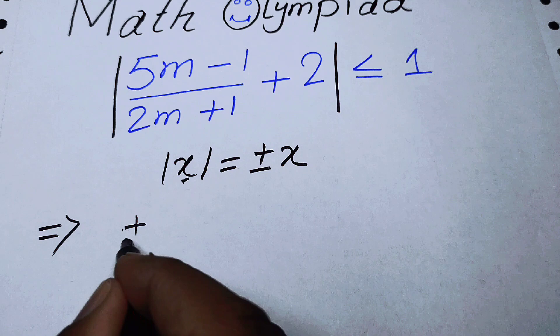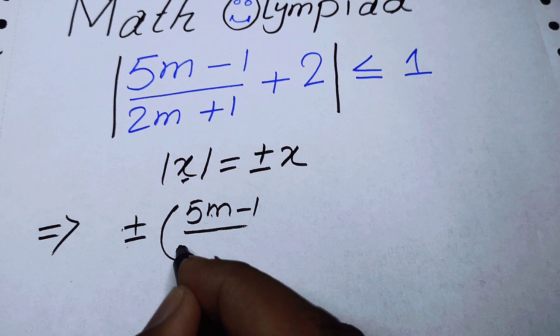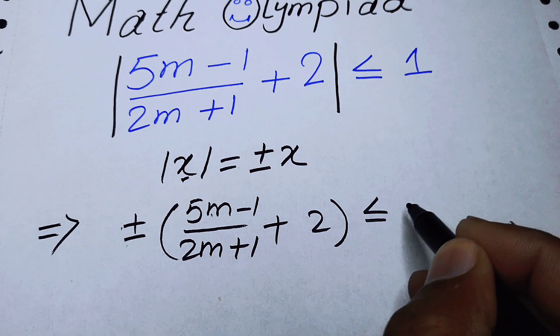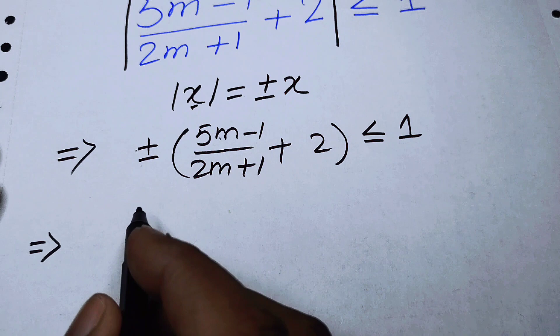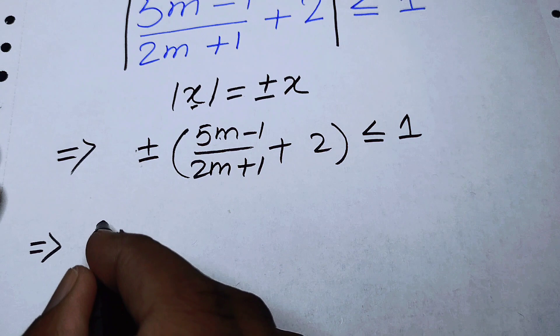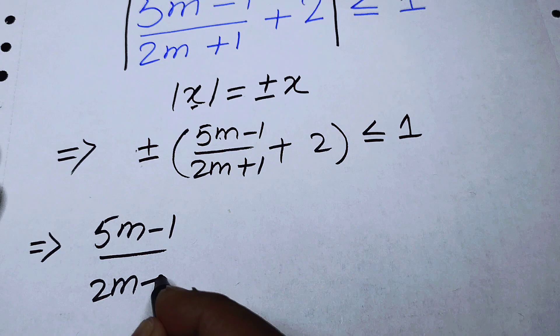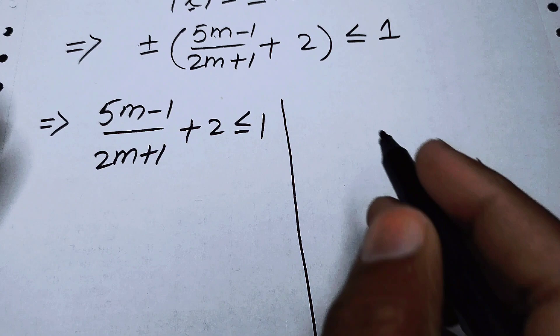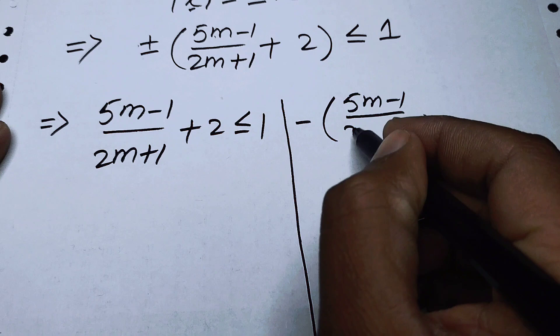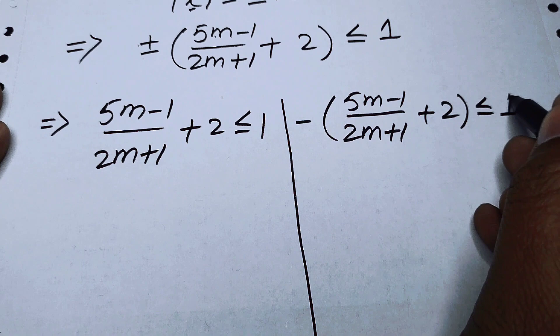First we open the absolute sign and obtain: ±(5m − 1)/(2m + 1) + 2 ≤ 1. We now consider two cases: Case 1 uses the positive sign — (5m − 1)/(2m + 1) + 2 ≤ 1 — and Case 2 uses the negative sign — −(5m − 1)/(2m + 1) + 2 ≤ 1.